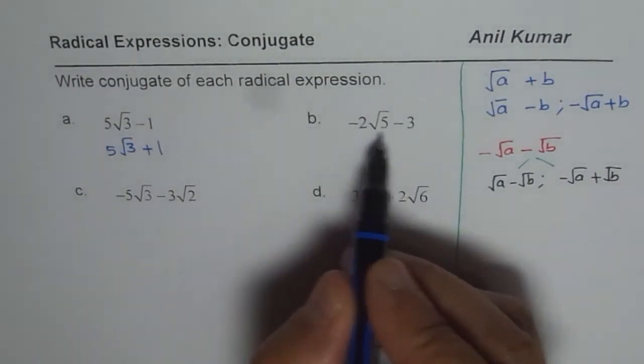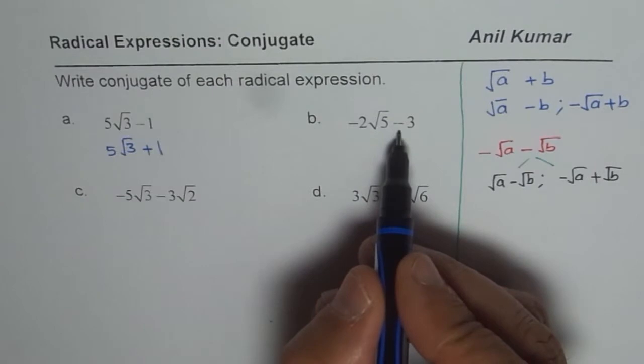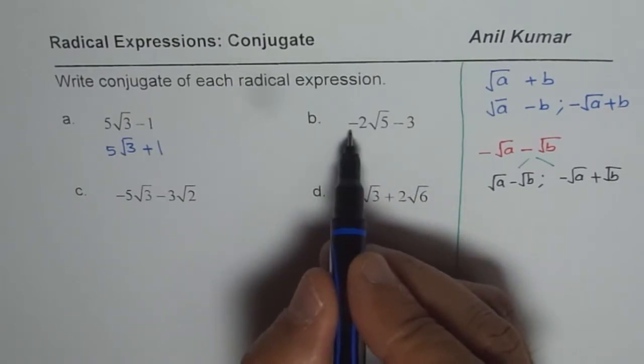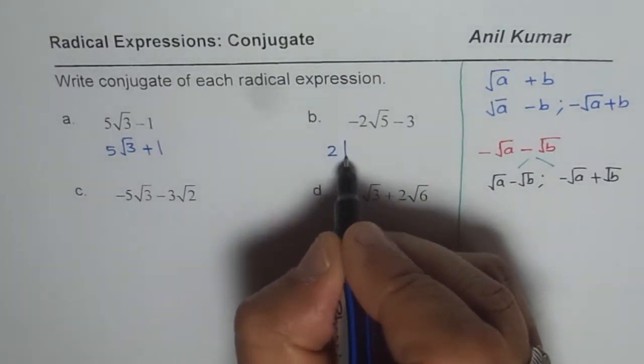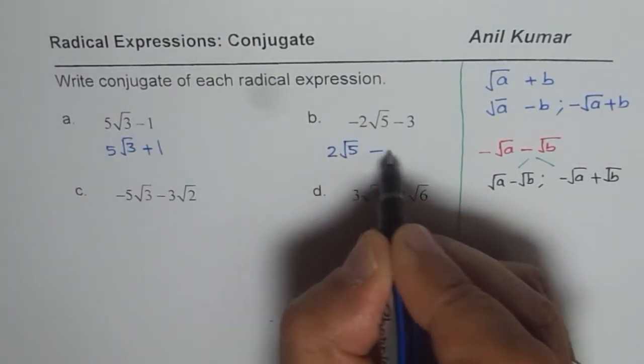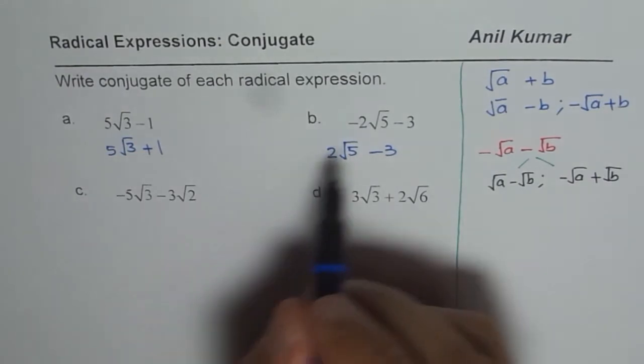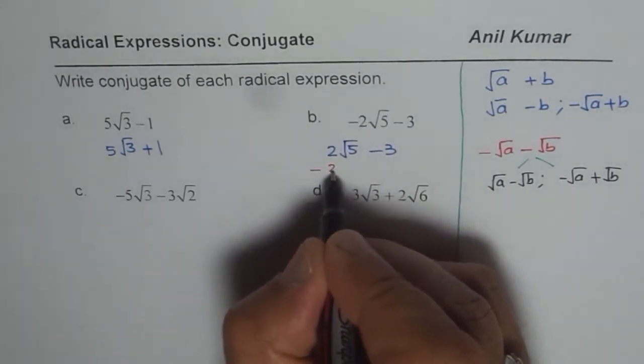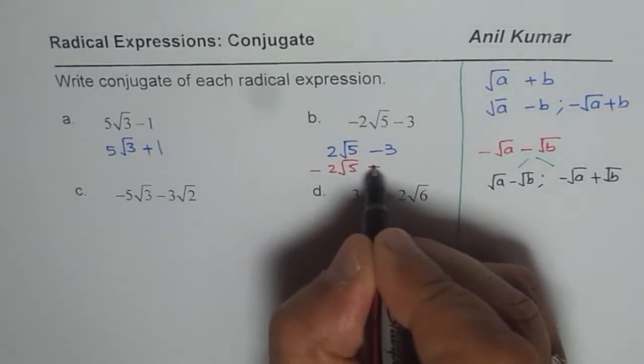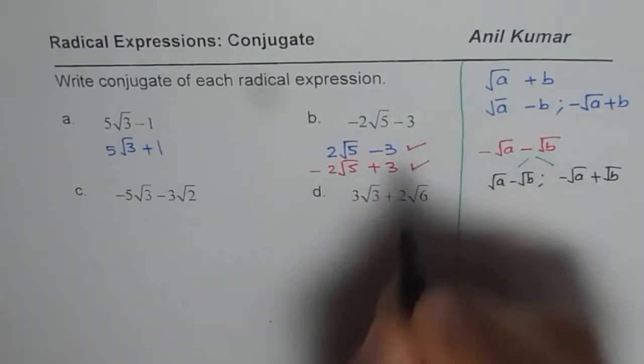In this case I have a choice. I could either make +3 or +2√5. I will prefer this one, so the conjugate is 2√5 - 3. However, if you write -2√5 + 3 that will also be right. So both are right.